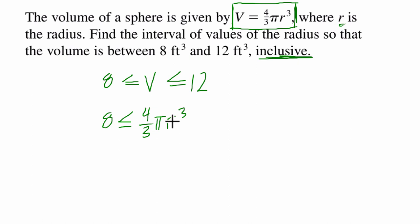And how do I do that? Well, here, my first step might be to divide everything by pi. Now, if I divide by pi in the middle term, I cancel it out. So I'm trying to get r by itself. That's my first step.